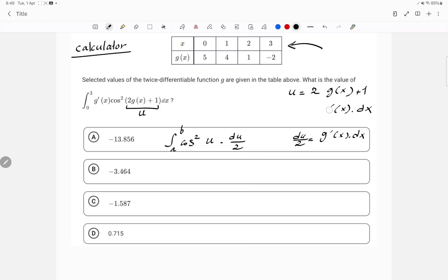So let's work with the expression u is equal to 2g(x) plus 1. When x is 0, which is this one, then I have 2g(0) plus 1. And when x is 0, g is 5. So 2 times 5 plus 1, which is 11. So instead of x of 0, I'll be putting 11 here.